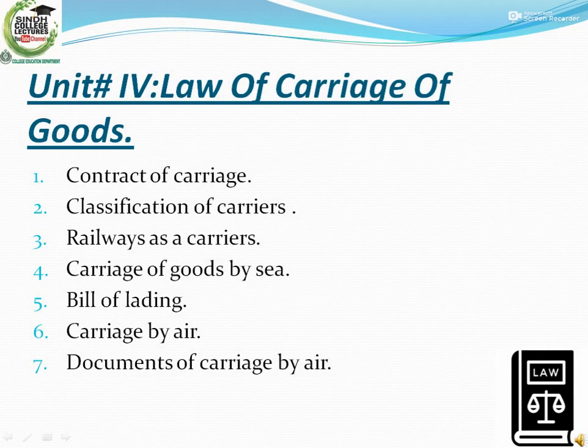Unit Number 4 is related with the Law of Carriage of Goods. This unit consists of 7 chapters. In this unit we will study: contract of carriage, classification of carriers, railways as a carrier, carriage of goods by sea, bill of lading, carriage by air, and documents of carriage by air.